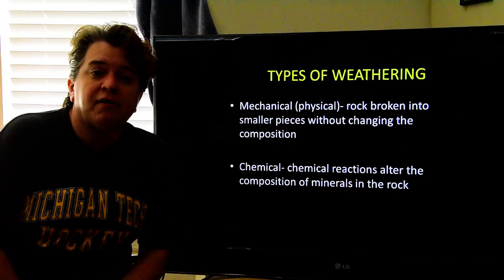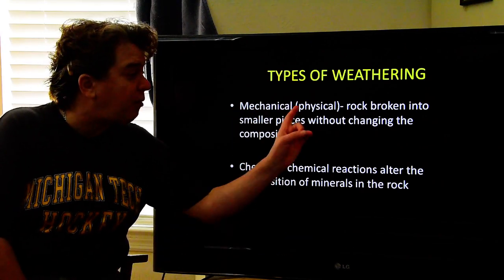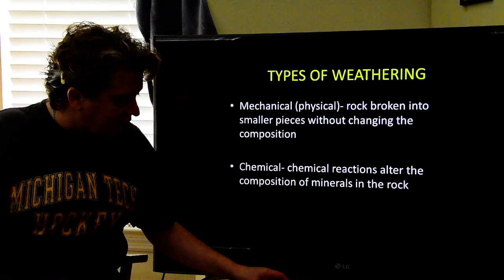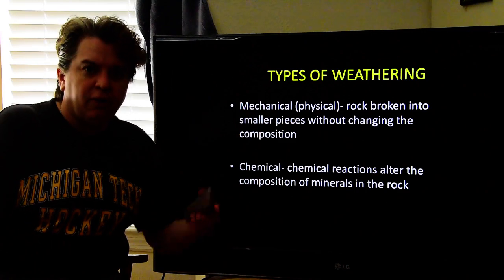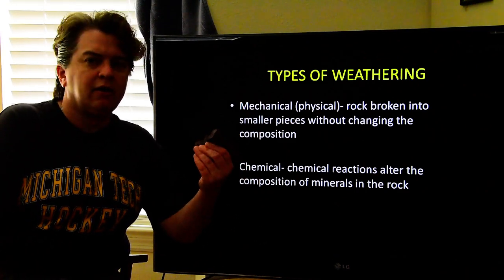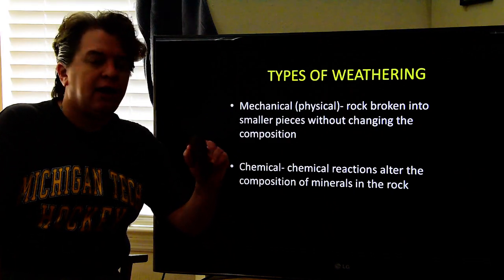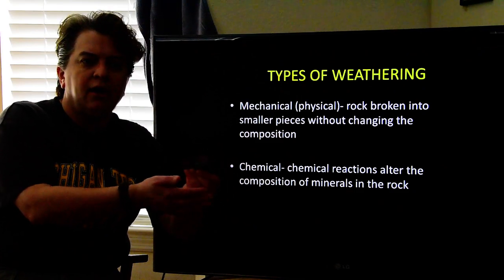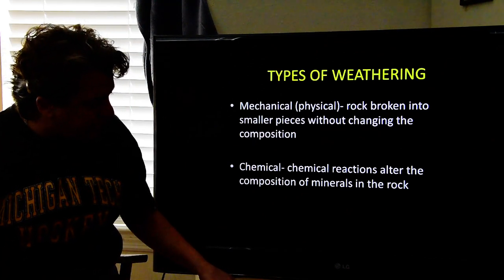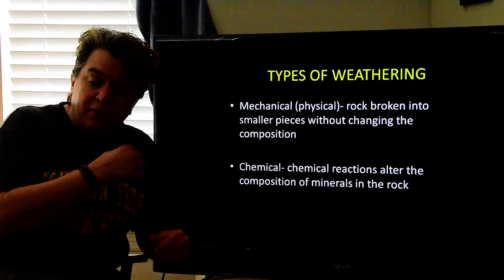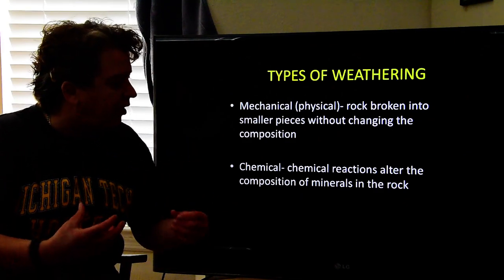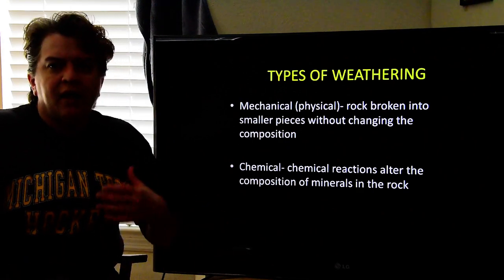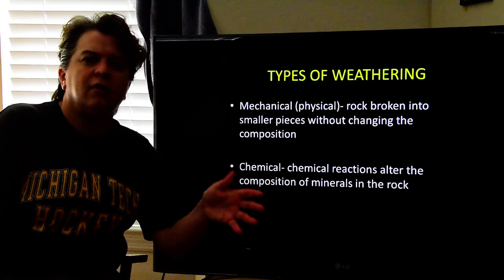There are two main types of weathering. There's mechanical weathering, which some books call physical weathering, and this is when rock is broken into smaller pieces without changing the composition. So a rock with silica, quartz, and hematite just becomes more pieces of silica, quartz, and hematite — no chemical change, just from a big piece to smaller pieces. This is different from chemical weathering, where there's actually a chemical reaction in the rock that changes the minerals inside — an actual change in composition. This usually happens because the minerals react with oxygen and water or other substances.